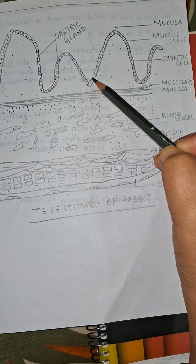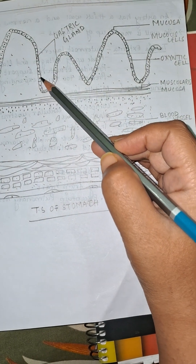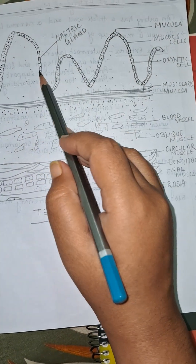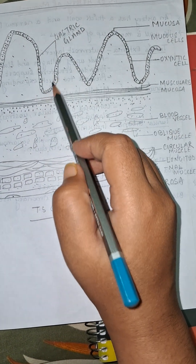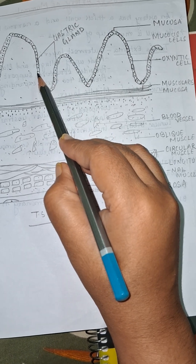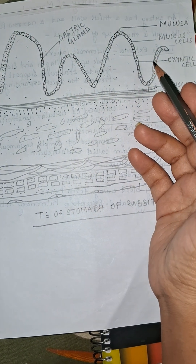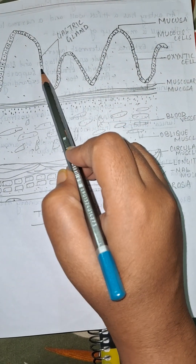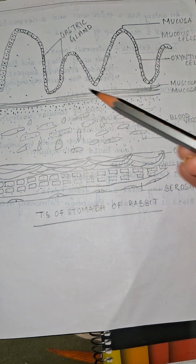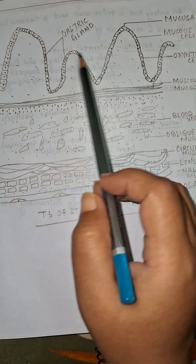In the gastric glands, peptic cells are present, mucous cells are in the upper portion, and oxyntic cells are inside the invagination. The function of peptic cells is to secrete the enzyme pepsin — some amount of protein is digested in the stomach by the help of pepsin. Oxyntic cells secrete HCl, which kills any bacterial substances present inside the food we consume.